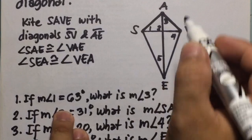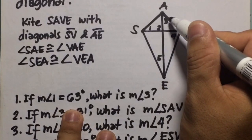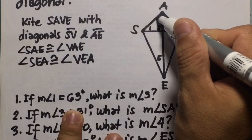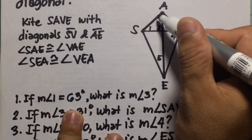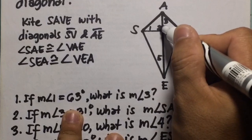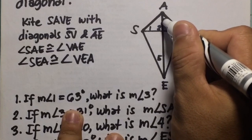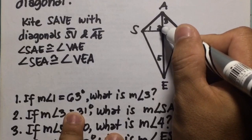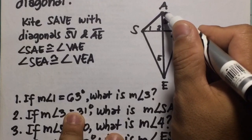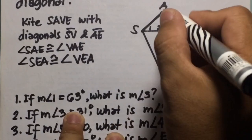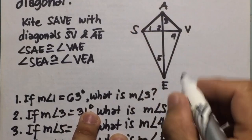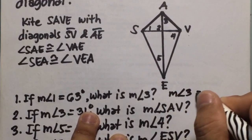Number one: if the measure of angle 1 is 63, what is the measure of angle 3? Angle 1 is 63, and angle 2 is 90. We find angle 3 using the sum of interior angles of a triangle, which equals 180. So 63 plus 90 equals 153, and 180 minus 153 equals 27 degrees. Since the two parts are congruent, the measure of angle 3 is also 27 degrees.